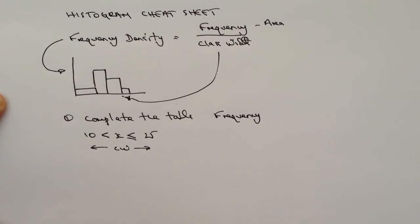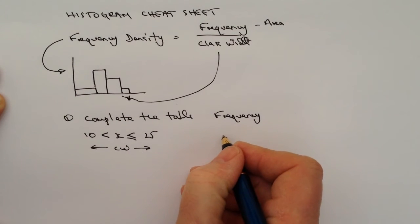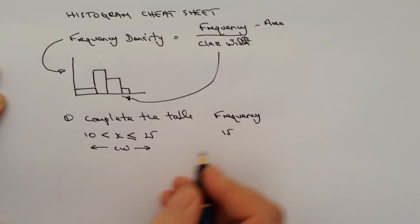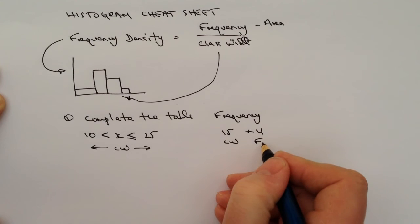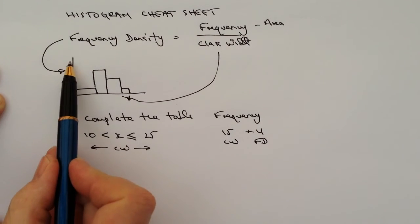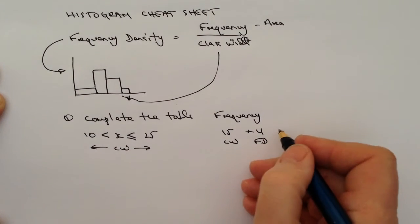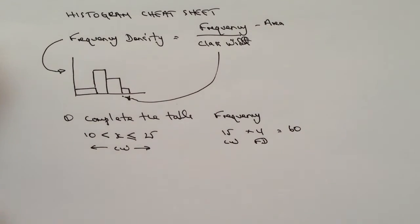So let's say 15 is the class width in this case, and the frequency density was 4—you simply read that from the left-hand axis. That would give you a frequency of 60.